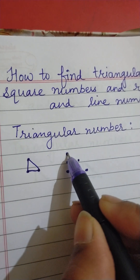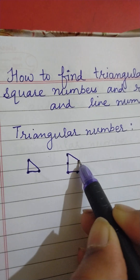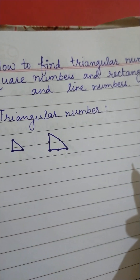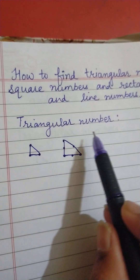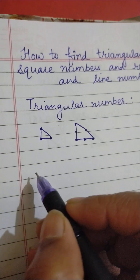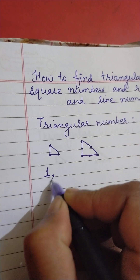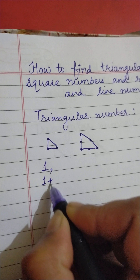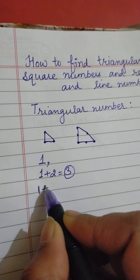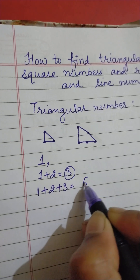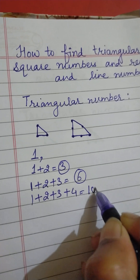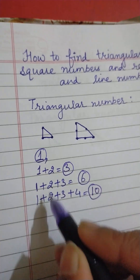Similarly, six dots also form a triangle, so six is a triangular number. Now I am going to tell you the trick to find triangular numbers. One is a triangular number. Then 1 plus 2 equals 3, so 3 is a triangular number. Then 1 plus 2 plus 3 equals 6, so 6 is a triangular number. Then 1 plus 2 plus 3 plus 4 equals 10, so 10 is a triangular number.